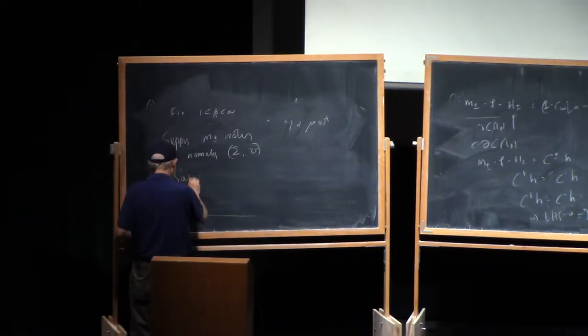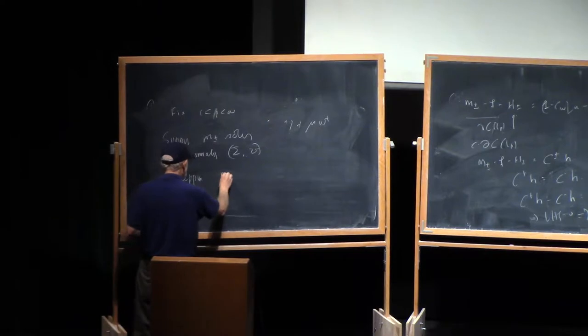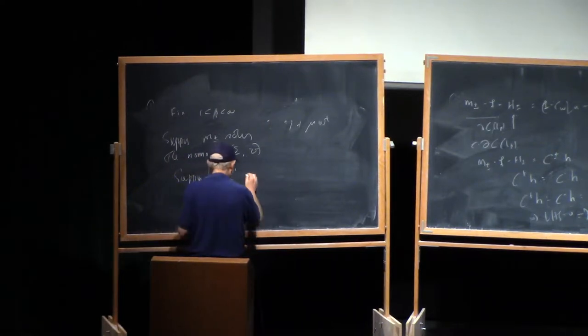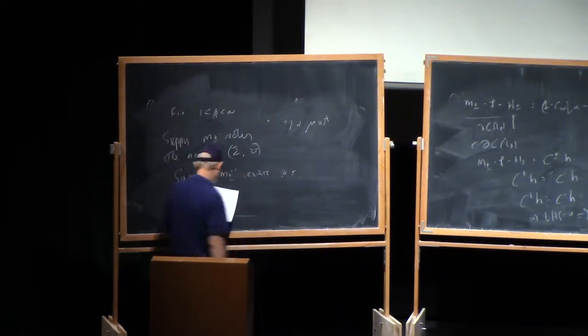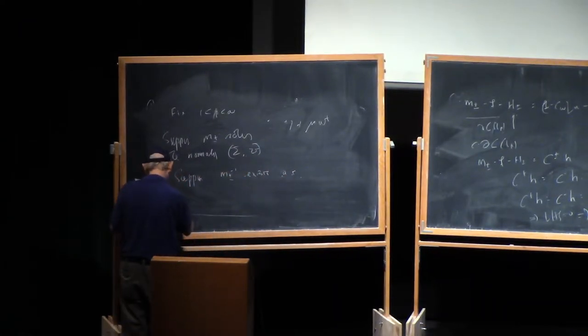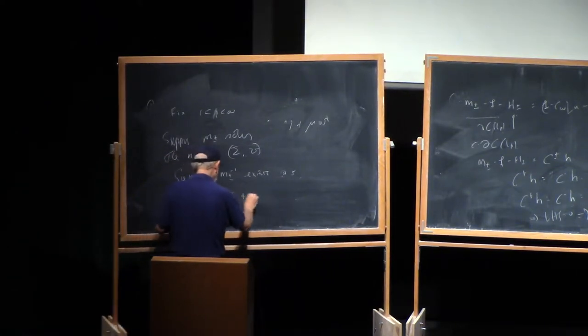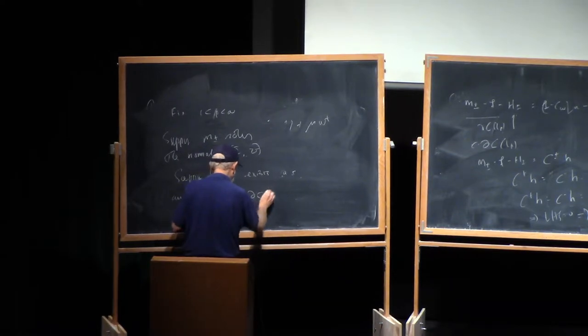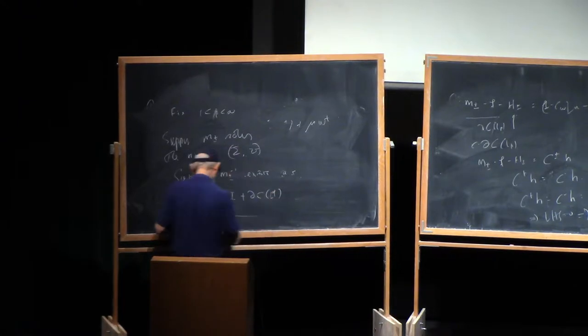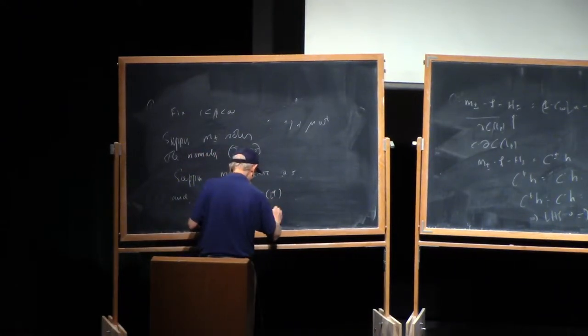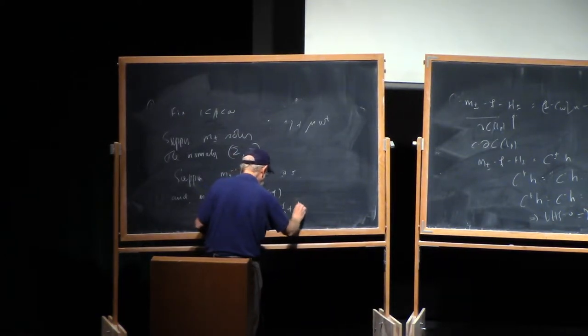Now suppose M plus minus inverse exists almost everywhere. And M plus minus inverse is equal to I plus C plus of some function in Lq, where 1 over r equals 1 over p plus 1 over q, less than or equal to 1.